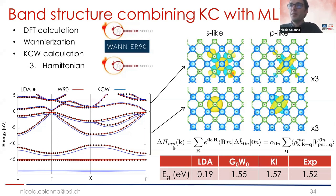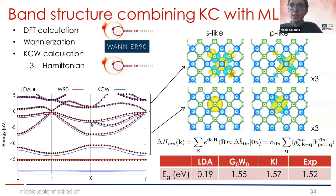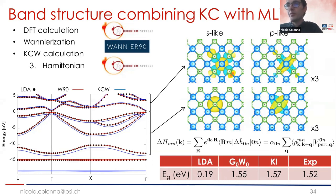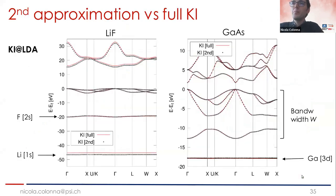Once you have the periodic part of the Wannier functions and the periodic part of the Wannier orbital densities, you compute the screening coefficients. This is the most intensive part of the workflow, requiring one linear response calculation for each different Wannier function in your system. But the nice thing is this can be done in a primitive cell with Brillouin zone sampling — no supercell needed. Last, once you have the screening coefficients, you build up the Koopmans Hamiltonian and diagonalize small matrices, one for each K-point.